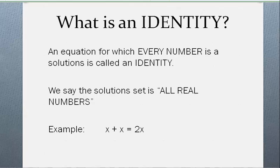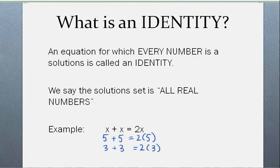What is an identity? An identity is an equation for which every number is a solution. We say the solution set to the equation is all real numbers. Here's an example: x plus x equals 2x. The reason this is an identity is that no matter what number you plug in, it's true. For example, if you plug in 5, 5 plus 5 is 2 times 5 — those are both 10. 3 plus 3 is 2 times 3. You could go on and on and check every single number you can think of, and that will be a solution. So anything where every single number is a solution is called an identity.